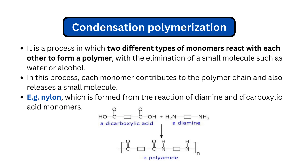In condensation polymerization, each monomer contributes to form the polymer chain and also releases some small molecules. A good example is nylon, which is made by condensation polymerization. Nylon is formed from the reaction of diamine and dicarboxylic acid monomers — these two different monomers come together to form nylon.